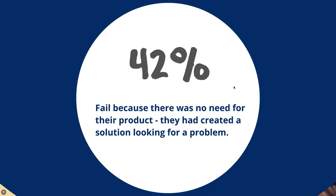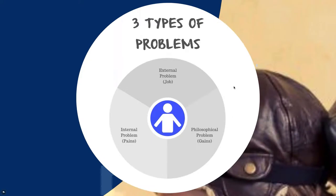Using this framework, we identify core key problems that your stakeholders and end users are trying to solve. There are typically three types: the external problem — the job you're trying to do, like completing a research report or getting from A to B in transport. Then internal problems — how we feel about things, what keeps us up at night, the barriers to solving the external problem. And philosophical problems — things related to values, like believing that every business should make a positive contribution to the environment.